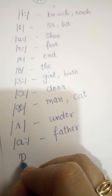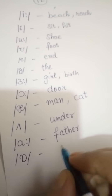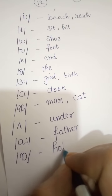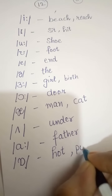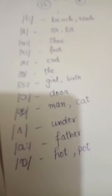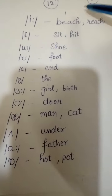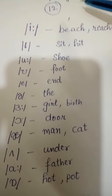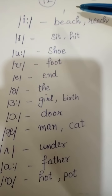Next is the short 'o' sound as in 'hot' and 'pot.' Students, as you can see, there are twelve monophthongs or pure vowel sounds, which we have covered with examples.